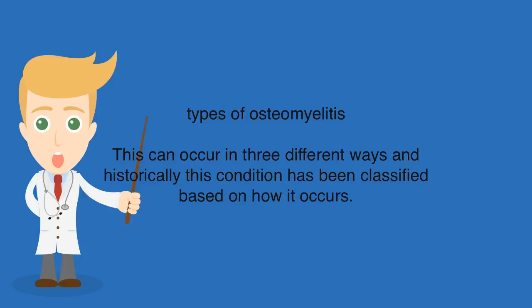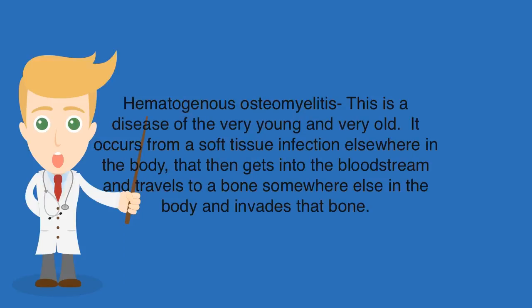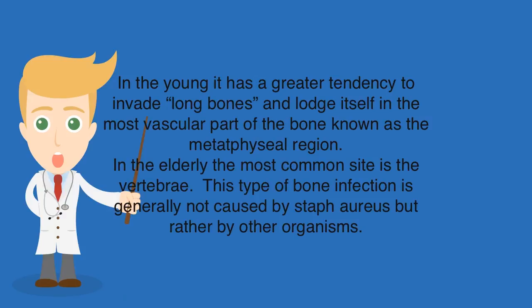Types of Osteomyelitis. This can occur in three different ways and historically this condition has been classified based on how it occurs. Hematogenous Osteomyelitis is a disease of the very young and very old. It occurs from a soft tissue infection elsewhere in the body that then gets into the bloodstream and travels to a bone somewhere else in the body and invades that bone. In the young it has a greater tendency to invade long bones and lodge itself in the most vascular part of the bone known as the metaphyseal region. In the elderly the most common site is the vertebrae. This type of bone infection is generally not caused by Staph aureus but rather by other organisms.